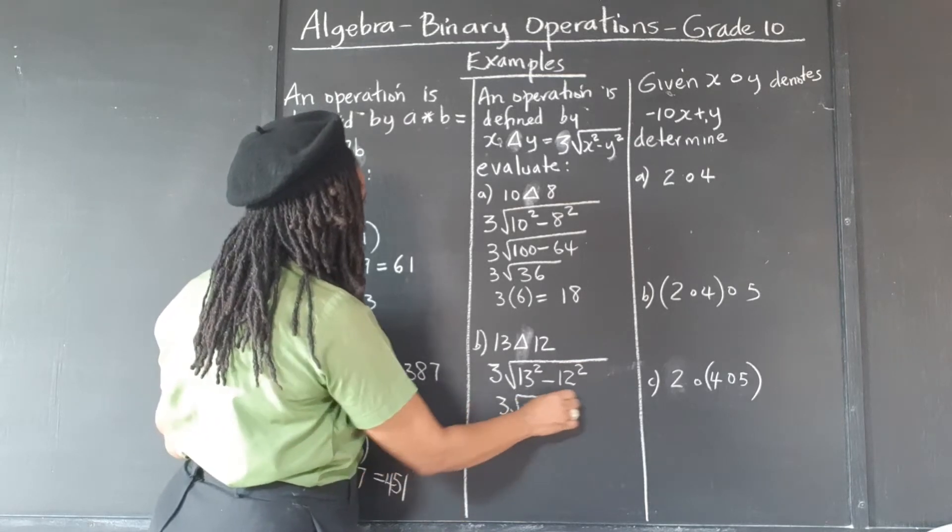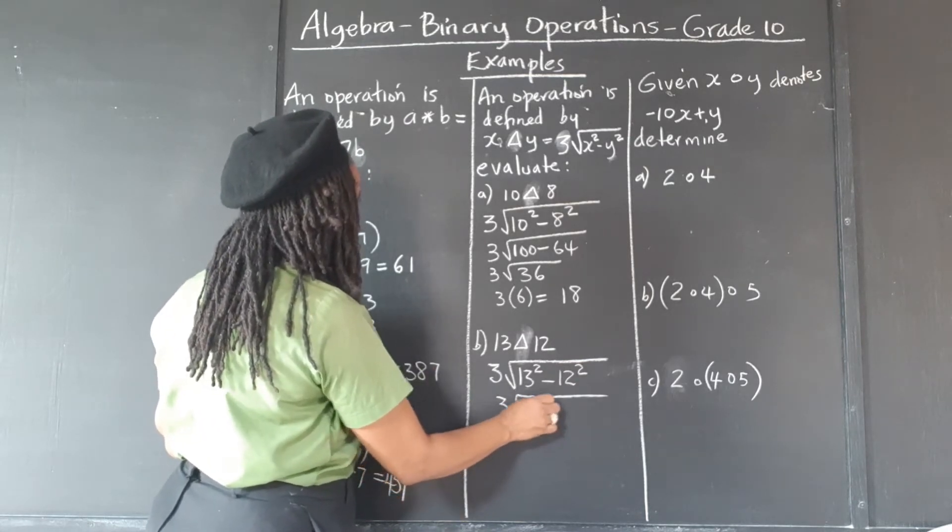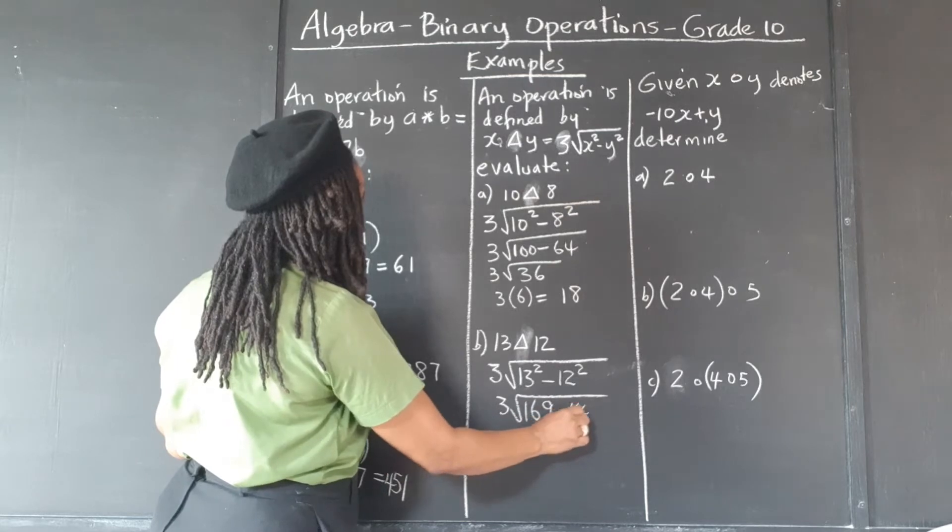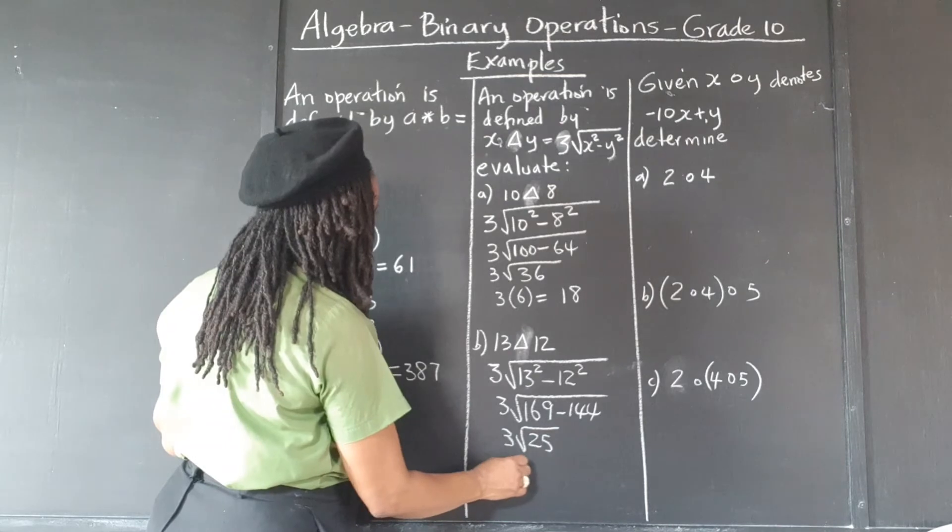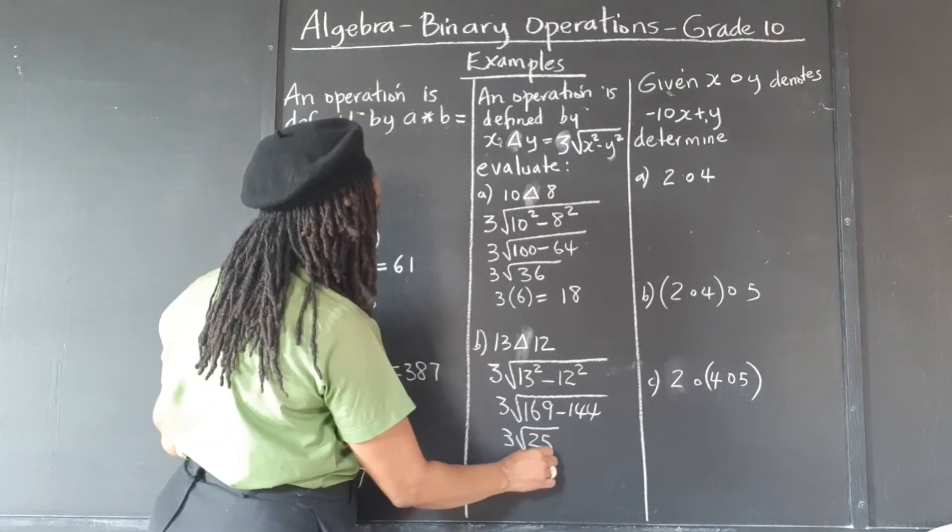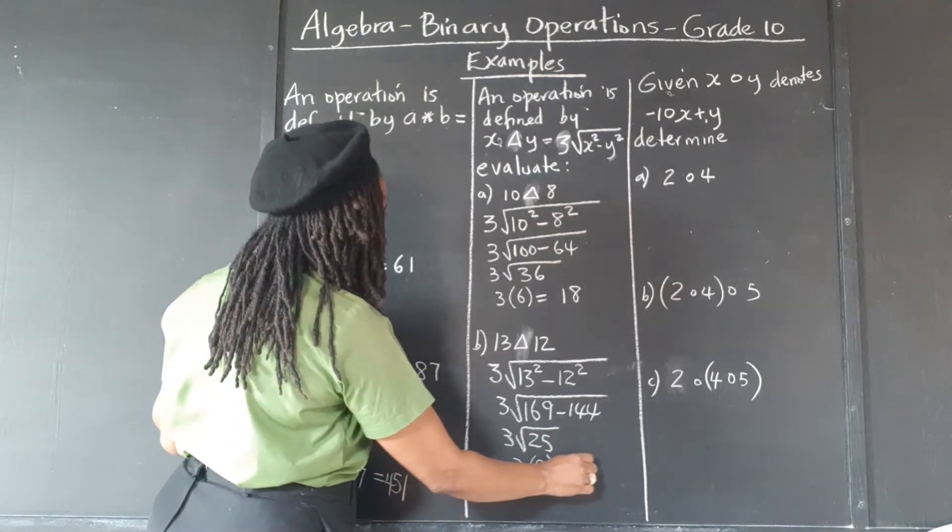so that's 3 times 169 minus 144, 3 times the square root of 25, which is 5, 3 times 5 is 15.